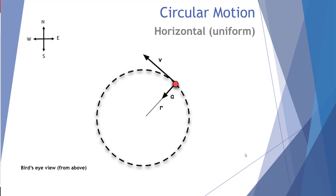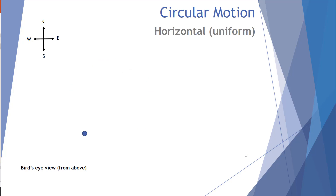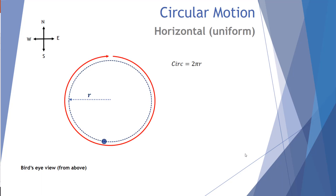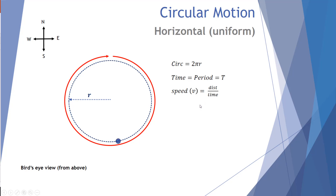In this video we'll be looking at circular motion, focusing on horizontal or uniform circular motion. We have an object moving around in a circle. As it moves around, you can see it travels a circumference of 2πr, shown by the red line here — the distance traveled in one complete cycle. It takes one period to complete that cycle, so using speed equals distance over time, the speed is 2πr over T.